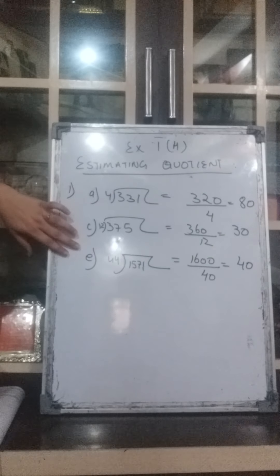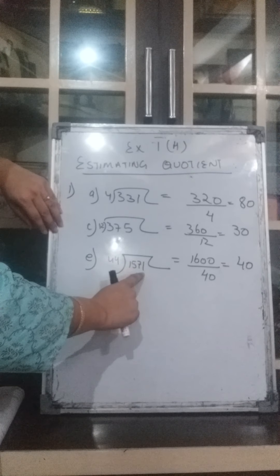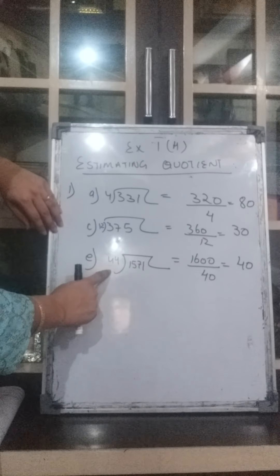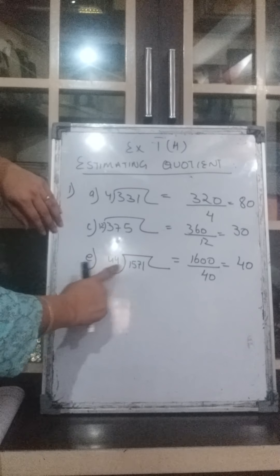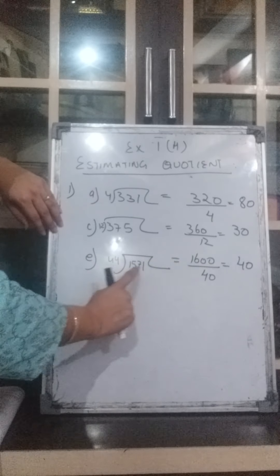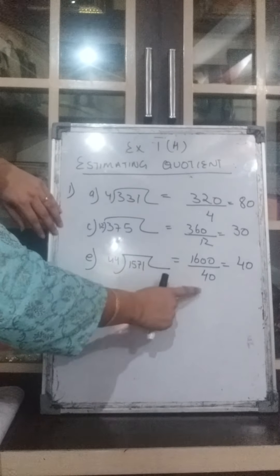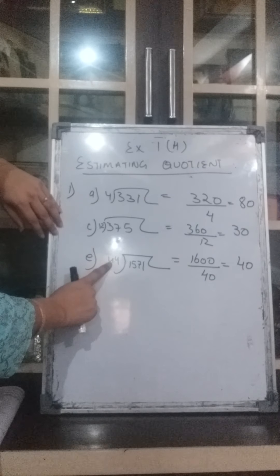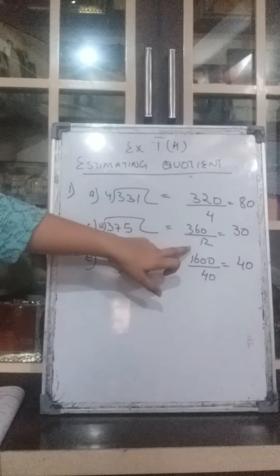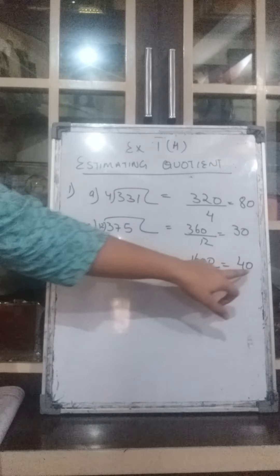E part: the divisor is 44 and the dividend is 1571. In this case they have converted both of them. The dividend has been converted to 1600 because 1600 is closer to 1571, divided by 44 converted to 40, so that 1600 can be easily divided by 40. The answer is 40.